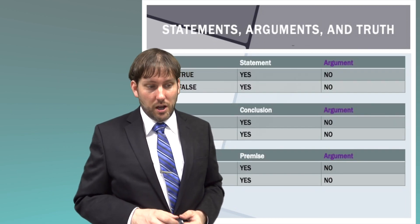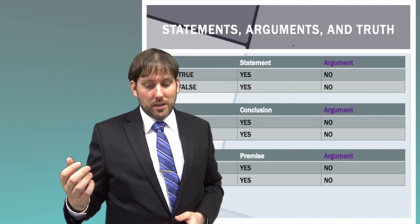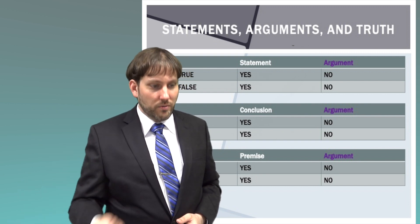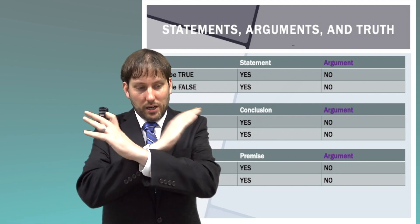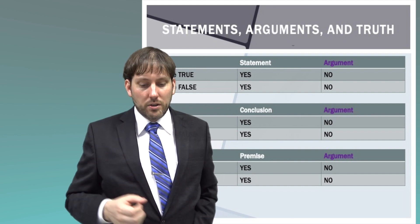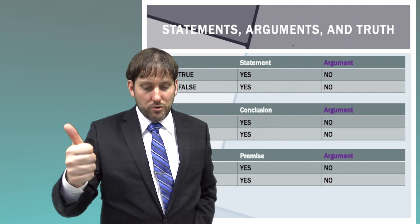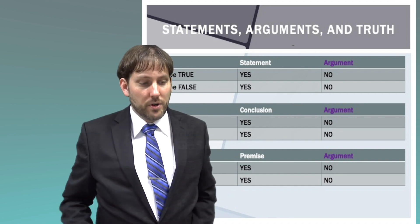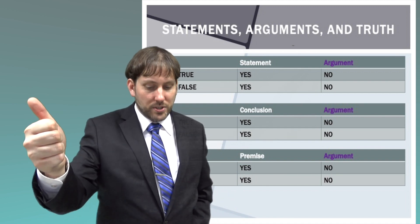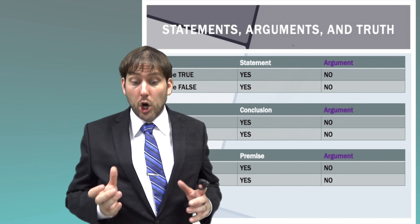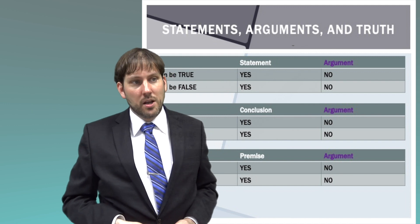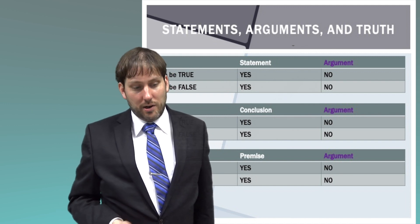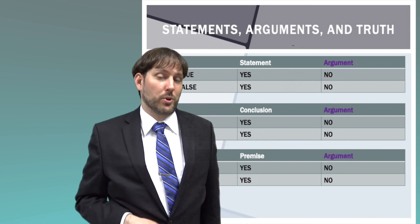A statement can be true or false. An argument cannot be true or false. A conclusion can be true or false. A premise can be true or false. But an argument cannot be true or false — true and false are properties that apply to each individual statement within the argument, not to the argument as a whole. This idea will be very important, so please try to learn and understand it.